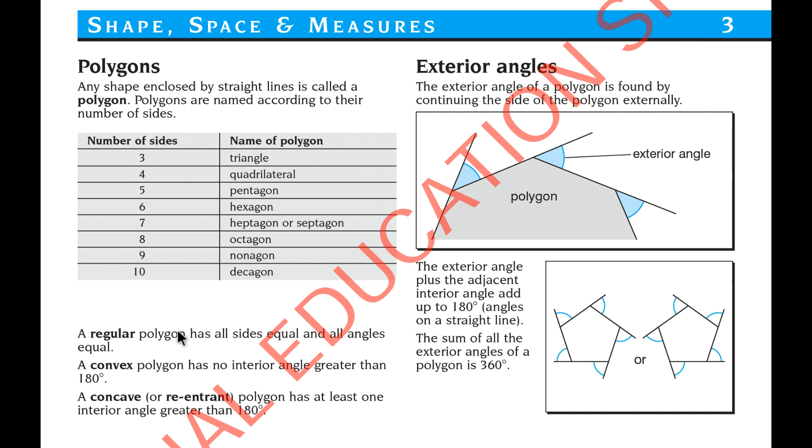Now, if you consider the rhombus, all sides are equal but all the interior angles are not equal to each other. So a rhombus is just a polygon, not a regular polygon.